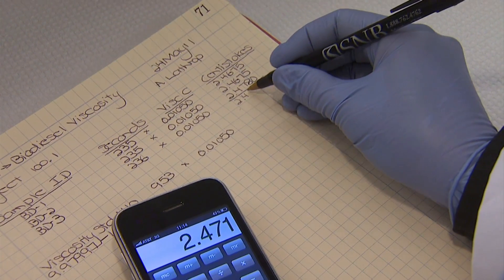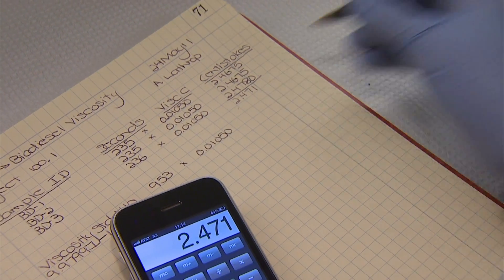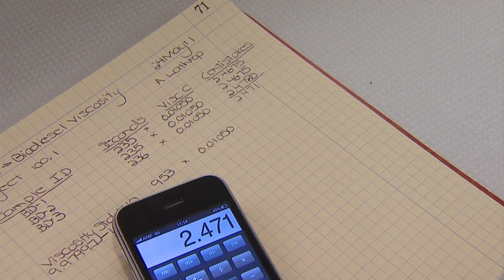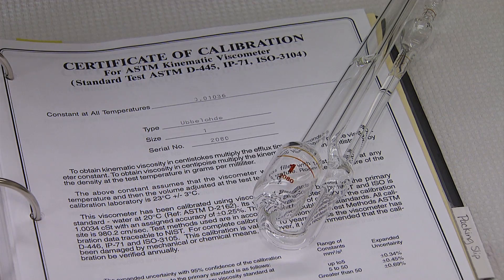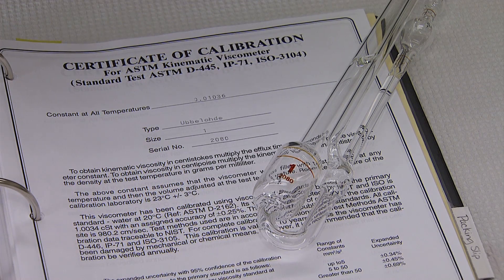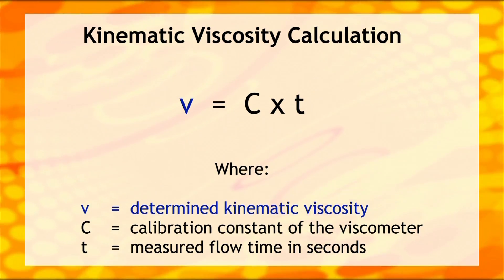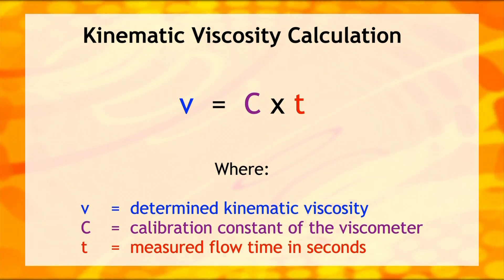Repeat the measurement two more times for a total of three measurements. Calculate the kinematic viscosity of the sample using the constant listed on the viscometer certificate. The kinematic viscosity is calculated by multiplying the measured flow time in seconds by the viscometer constant that is determined by the manufacturer. This calculation yields a result in the units of centistokes.